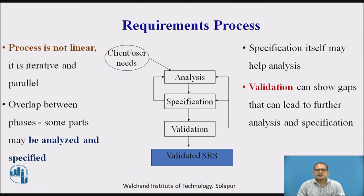Let us discuss the requirement process steps. The client or user needs are collected and analyzed. This process — analysis and specification — is not linear; it is iterative and parallel. There is overlap between the phases: some parts may be analyzed while some parts may be specified. Specification itself may help the analysis, and validation can show gaps that lead to further analysis and specification.